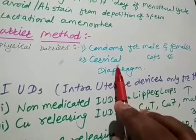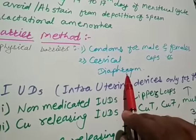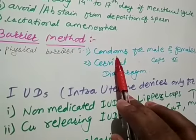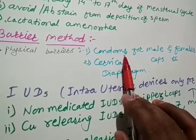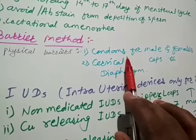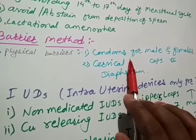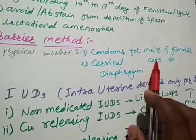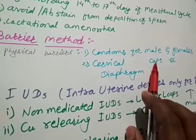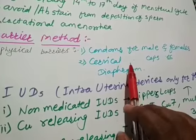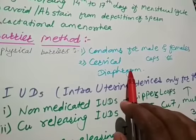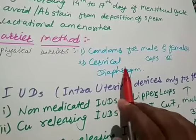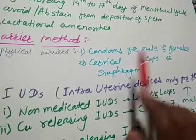And second type is that cervical caps or we can say diaphragms also. So this first method, these are the barrier methods. These are made up of the thin rubber or latex sheath that is used to cover the penis in the male or vagina and cervix in the female. So that just before the coitus, the semen from ejaculation, that will not enter to the female reproductive tract to prevent conception. This is about the condoms for male and females.